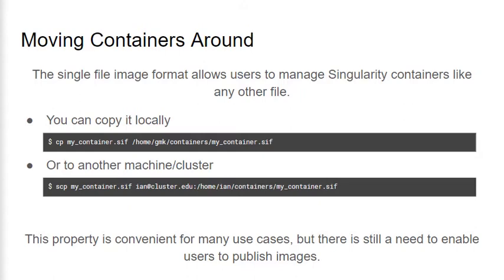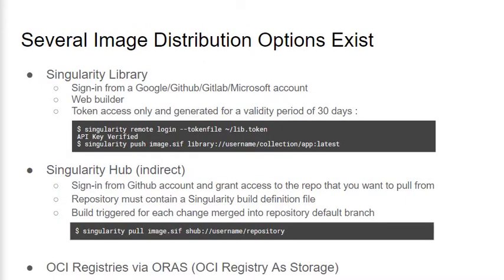While this satisfies many use cases, application authors still need services to host their containers to allow for effective distribution to interested users. For this purpose, there are several ways to distribute Singularity images. The Singularity container library maintained by Scilabs allows users to sign in with a Google, GitHub, GitLab, or Microsoft account. Each user can then create and manage collections of containers. It also gives the possibility for users to build an image through their web interface by providing a build definition file. Users need to generate an access token in order to modify their collections within the service. Here we can see how we can configure the Singularity command line to register an auth token with the remote command group and then push an image to their collection with the push command.